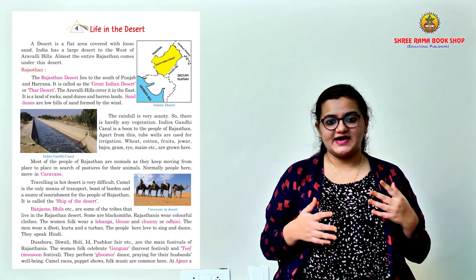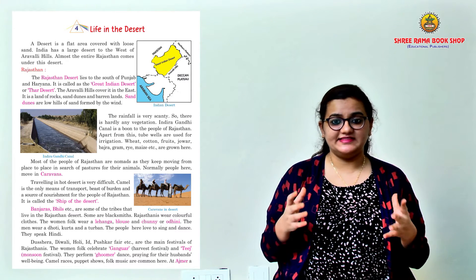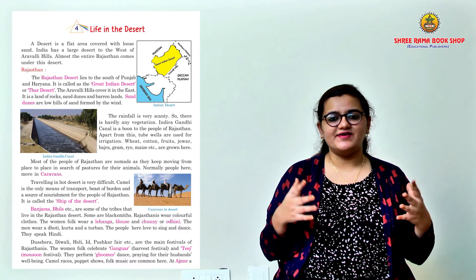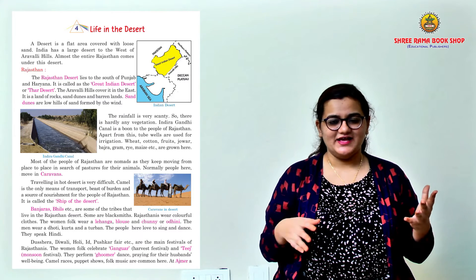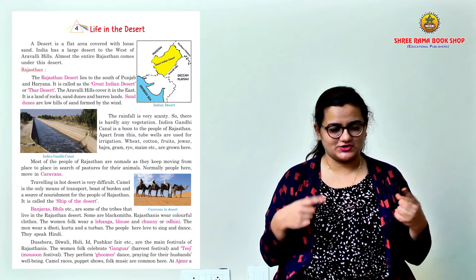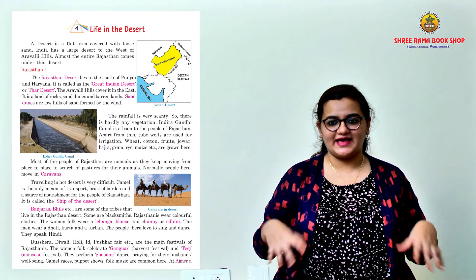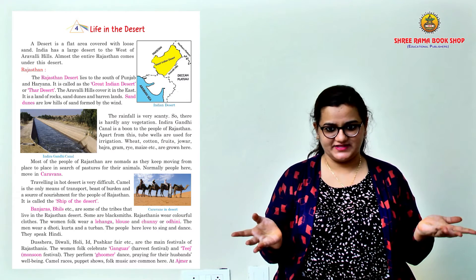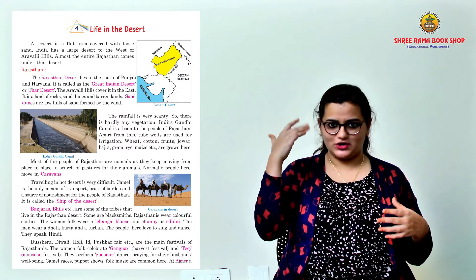There are Banjaras, Bheels, etc. — they are some of the tribes that live in the Rajasthan desert. And some of them are blacksmiths. They wear colourful clothes, as you might have seen in movies or tourism channels. The women folk wear a lehenga, blouse, and a chunni or also called an odini. The men wear dhoti, kurta, and a turban on top.